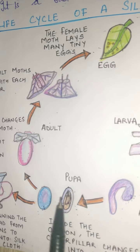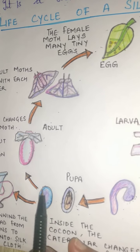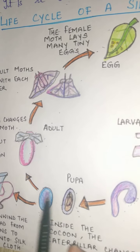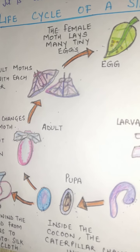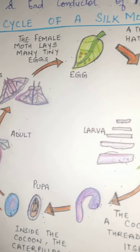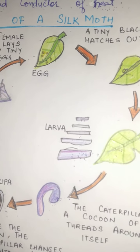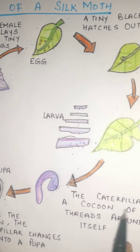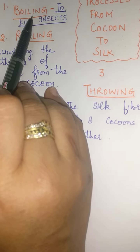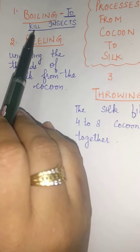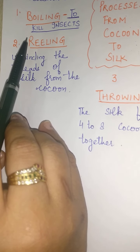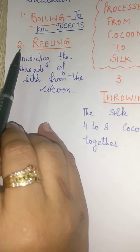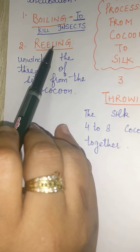This is called spinning of the cocoon. In this process, the cocoons are collected and boiled or treated in ovens to kill the insects inside.